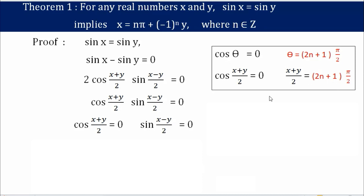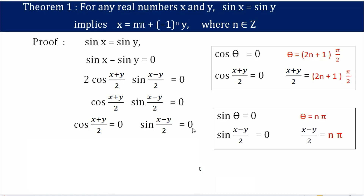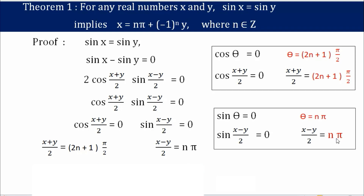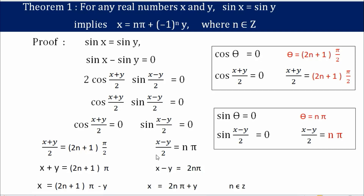Similarly, sin((x-y)/2) equals 0 resembles sin θ equals 0, where θ is (x-y)/2. For sin θ equals 0, we have the relation θ equals n pi. So for sin((x-y)/2), this relation becomes x minus y divided by 2 equals n pi.